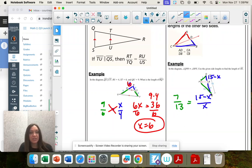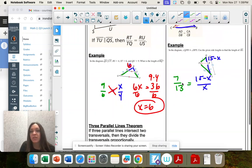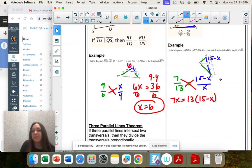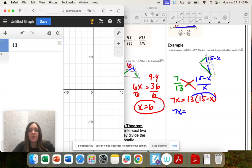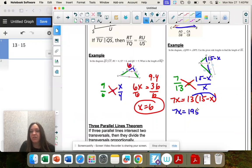Cross-multiply: 7 times x equals 13 times 15 minus x. I put the 13 in parentheses because I need to remember to distribute that. So 13 times 15 is 195, and then 13 times negative x is negative 13x, and now I'm going to solve.